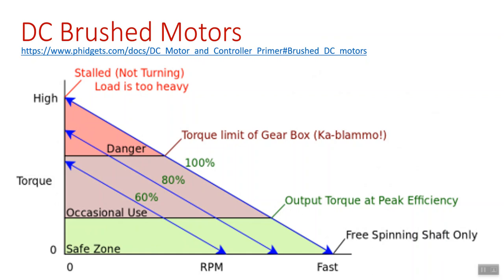Even the motor itself — you don't want to run for very long periods down in this so-called danger zone. All this really boils down to heat. As you get into higher torque and lower speed, you're putting more current into the motor, which through inefficiencies creates a higher heat load inside. When you stall it, that actually tends to increase the current draw beyond what it might even be rated on the spec sheet. So it's generally something you want to avoid.